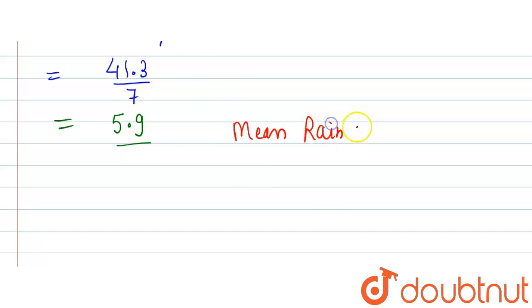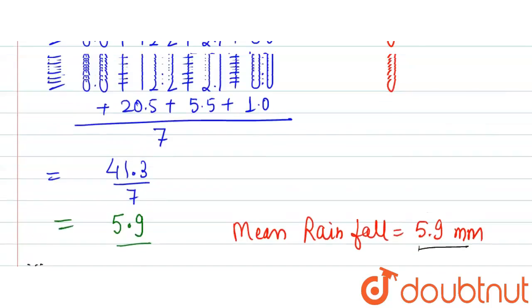Now moving on to the third part, it has asked on how many days the rain was less than the mean rainfall. Now that we know that the mean rainfall is 5.9, we can check how many days the rainfall is less than 5.9.